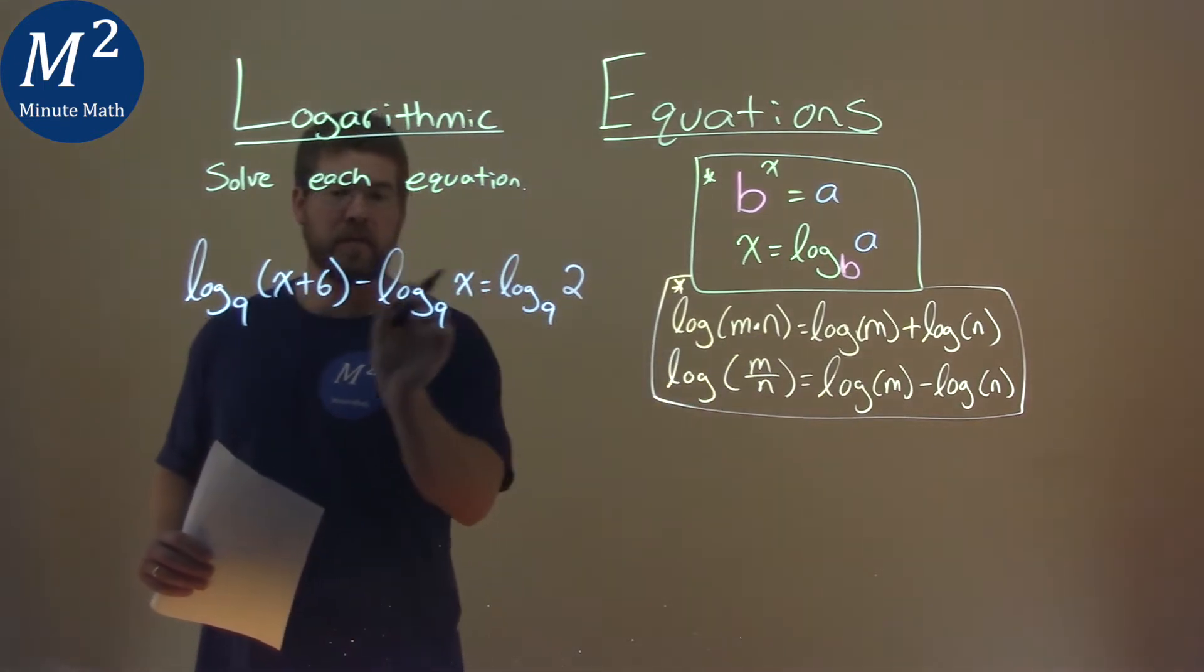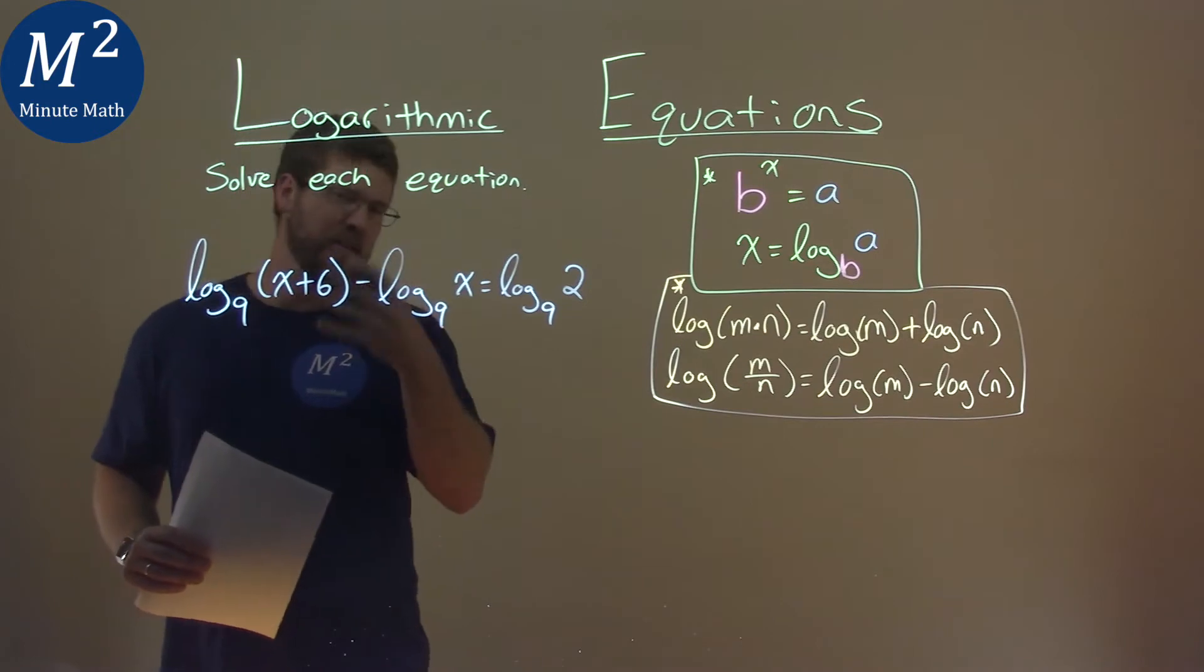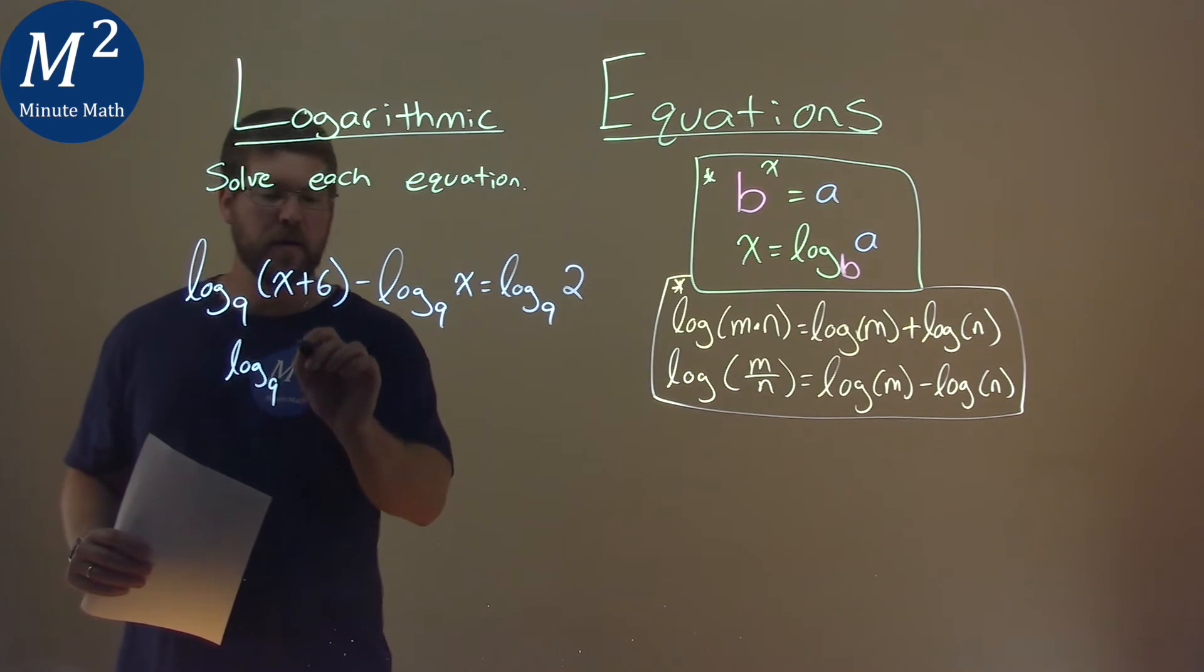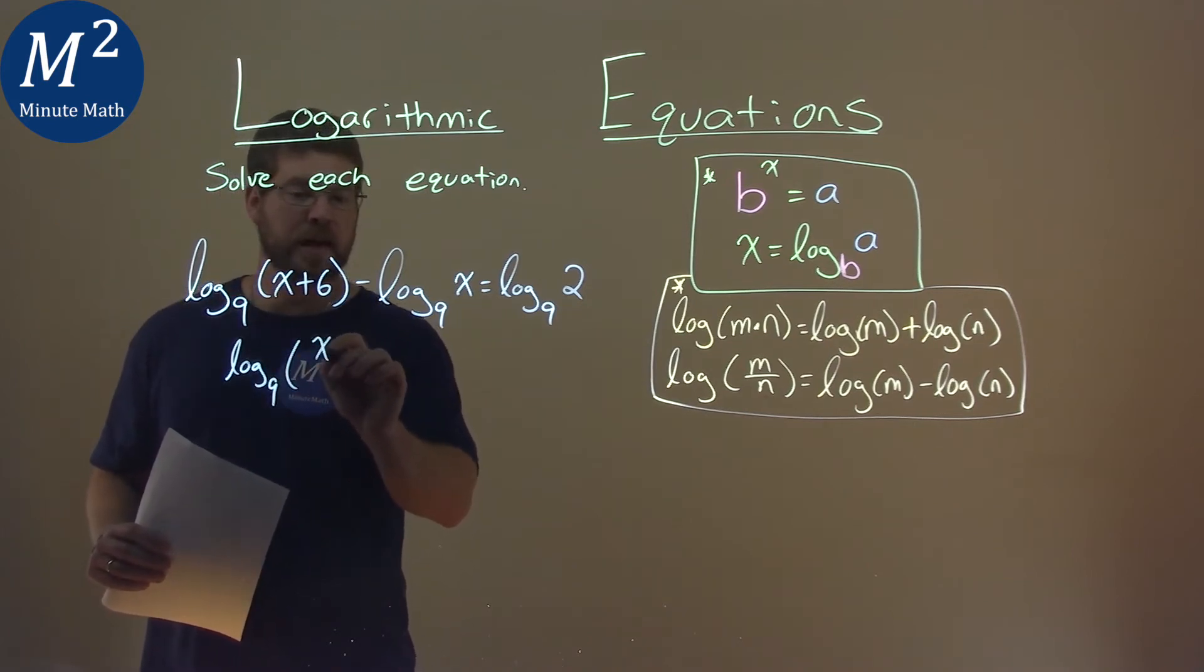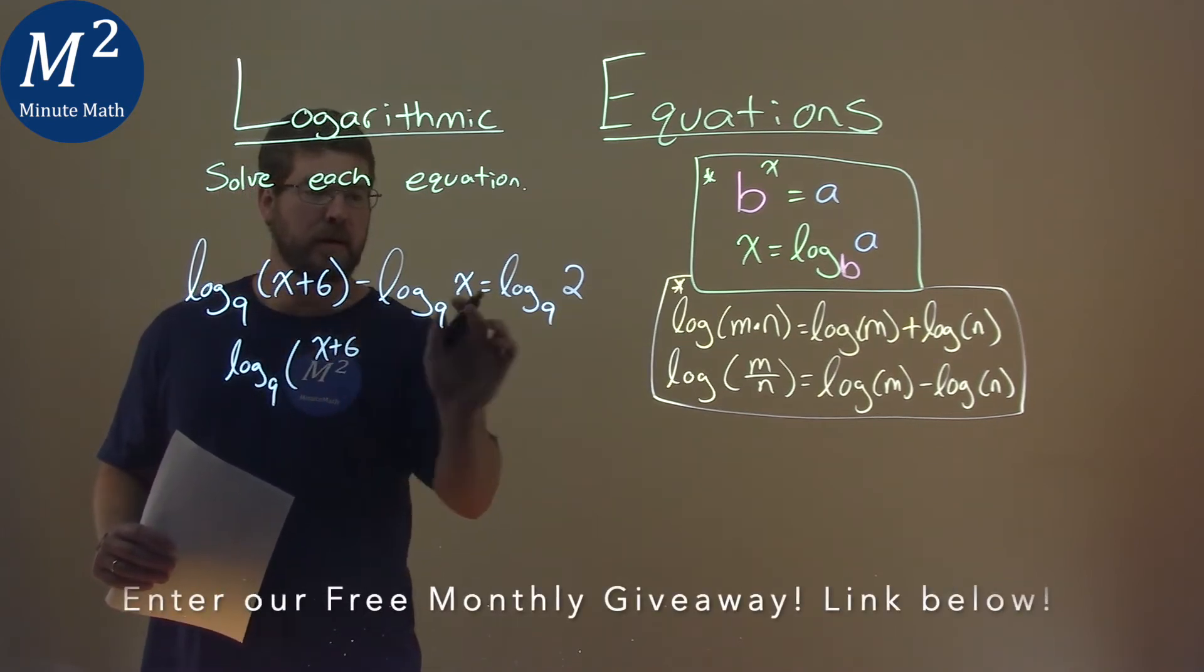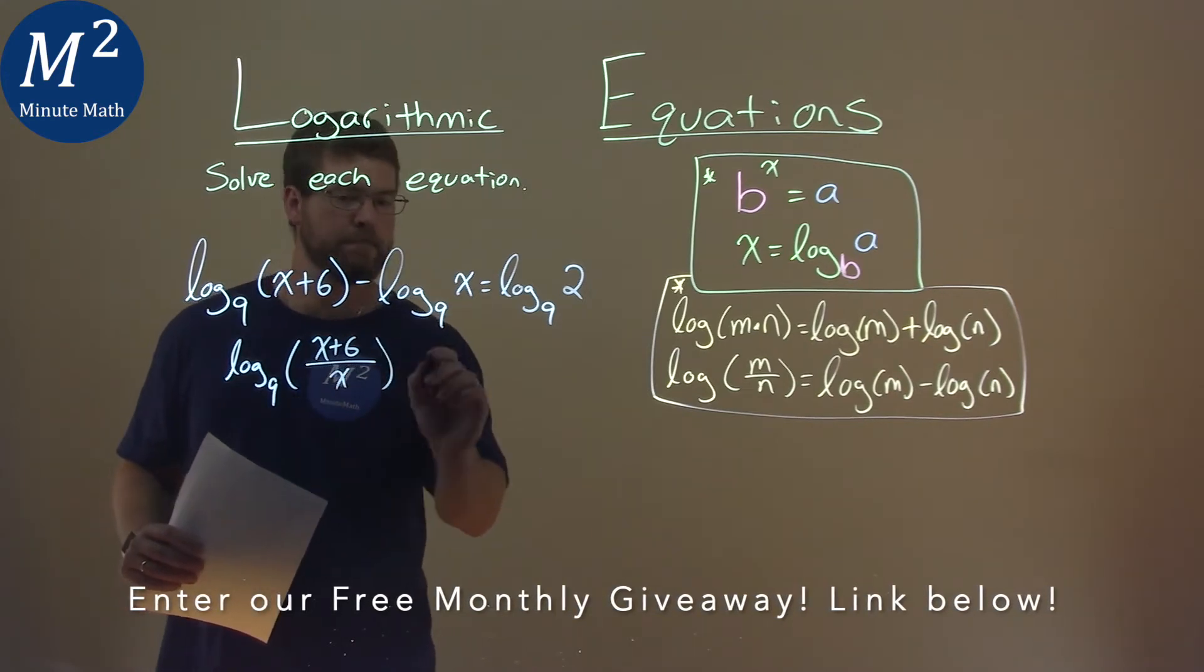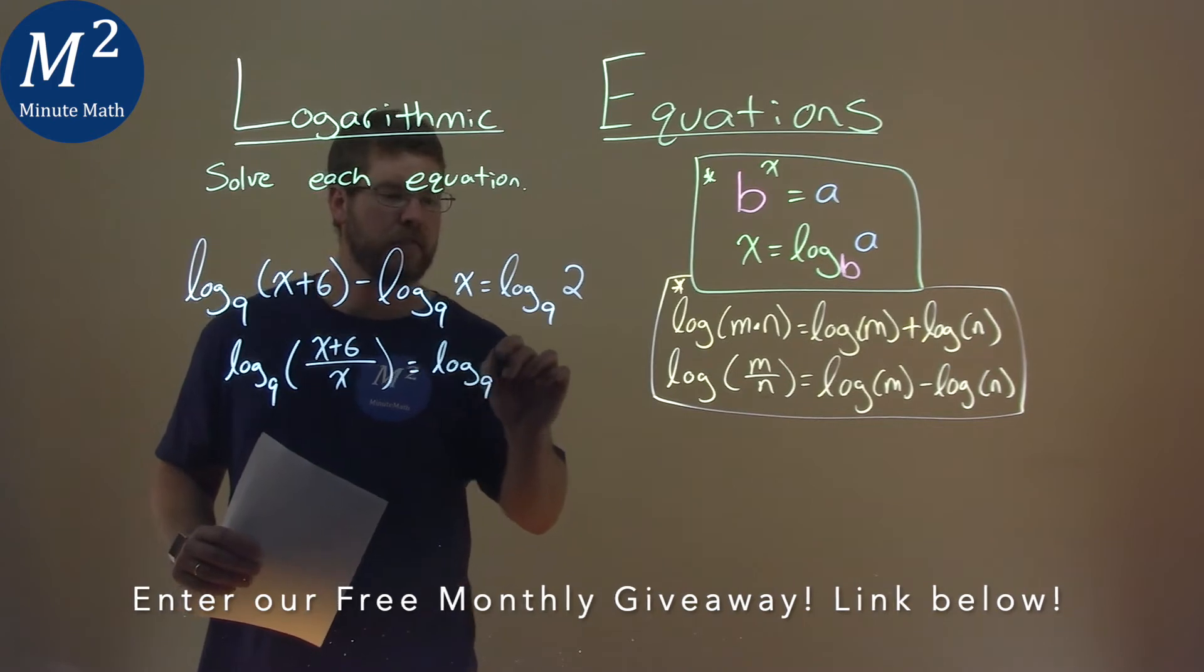So we can take the inside part, that x and the x plus 6, and we can divide them by each other. So we have log base 9 of one big inside part, which is x plus 6 divided by the second part, which is just the x. And that's equal to log base 9 of 2.